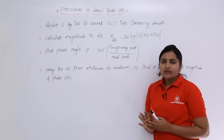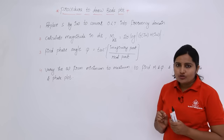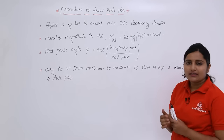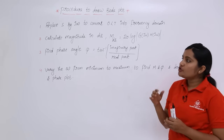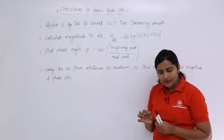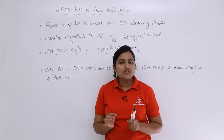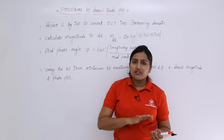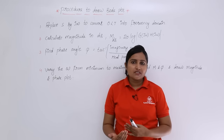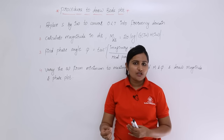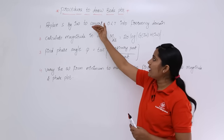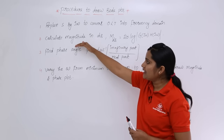The main steps to draw a Bode plot for any open loop transfer function are as follows. First, replace s with jω in the transfer function to convert the open loop transfer function (OLTF) from the s-domain into the frequency domain. For example, if given an OLTF in the s-domain, substitute s = jω to get the frequency domain representation. Then calculate the magnitude in dB.